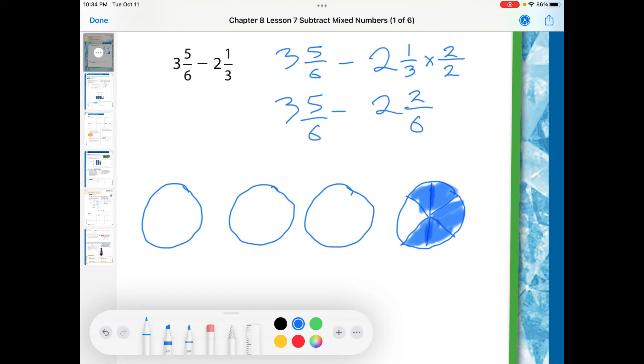But the problem says I have to take 2 and 2 sixths away. So I'm going to go ahead and take away, this is the first one I'm going to take away. And I'm going to take a second one away. All right. And then I have to take away 2 of the 2 sixths. So I'm going to just clean out that pie shape right there. And I'm going to clean out that pie shape right there. And I still have in my model, I still have 1 and 3 sixths.